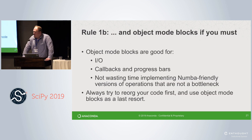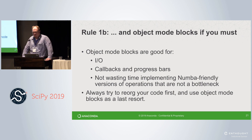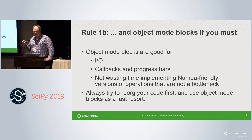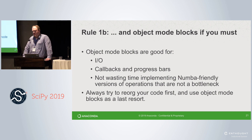We have given you an escape hatch: if you go look in the docs for something called an object mode block, there's a way in Numba, even when you're in nopython mode, to explicitly jump back out into interpreter land to do something we can't compile. This tends to be good for things like IO, callbacks, and progress bars — things that are not the bottleneck. Don't force everything to compile. Compiling is not the goal; speed is the goal.